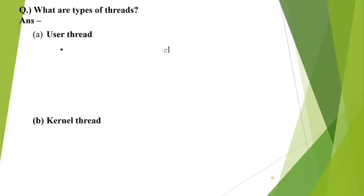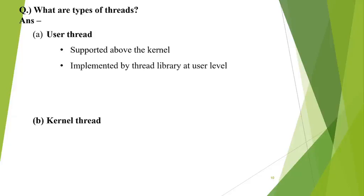User-level threads are supported above the kernel threads. That means if we do thread creation at our end using our own programming languages, they are supported above the operating system level threads — the system-level threads which the system creates to support various operations. User-level threads execute prior to the kernel-level threads. A thread library available at the user level supports the creation and management of these threads.